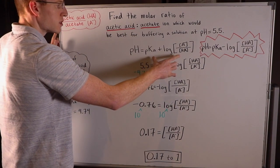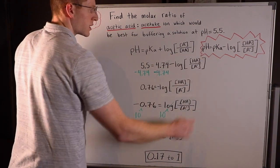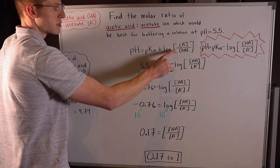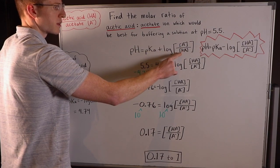So the reason that matters is because there are two forms of the Henderson-Hasselbalch equation. pH equals pKa plus log of the concentration of the conjugate base over the acid.